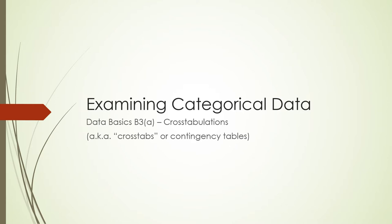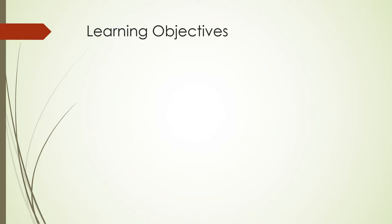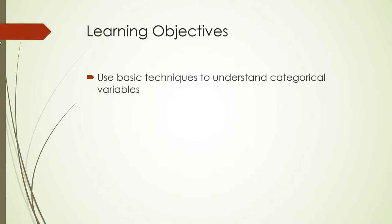We talked about numerical data last time — representing it in tables and data matrices — but here let's talk about categorical data, specifically cross tabs, contingency tables, cross tabulations. Those all mean the same thing. The learning objective here is to use basic techniques to understand categorical variables and the information in them, specifically the information in contingency tables.